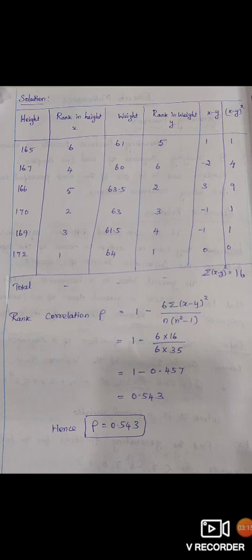2-3 = -1. 3-4 = -1. 1-1 = 0. The final column, you find out the value (x-y)². You have to square the fifth column.